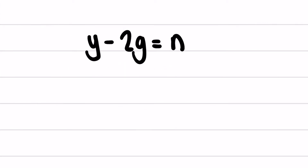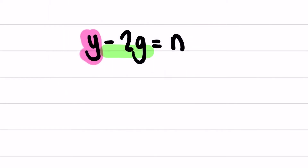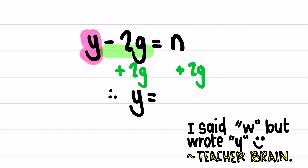Looking at the next one, we want to again isolate y. In order to isolate y, I want to get rid of what's stopping y from being alone, which in this case is the negative 2g. The 2g is being subtracted, so the opposite of subtraction is addition. I'm going to add 2g to both sides. Therefore w equals n plus 2g.